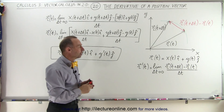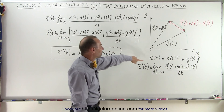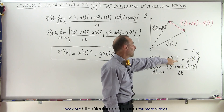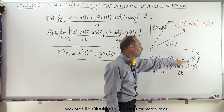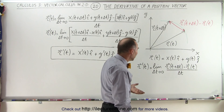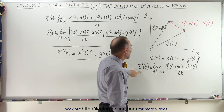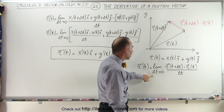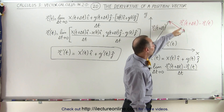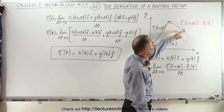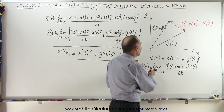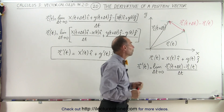So now let's explore it a little bit more. If we define our position vector r of t as being some function of t in the i direction plus another function of t in the j direction — the functions being x and y — then if we take the derivative of that, that should be the limit as delta t goes to zero of the difference between those two, divided by delta t. That will then define the derivative of the position vector.